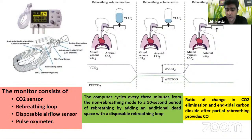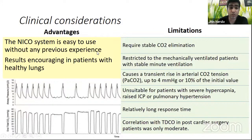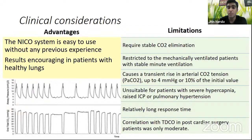The partial carbon dioxide re-breathing method applies the Fick principle. Based on alternating between re-breathing and non-re-breathing periods, the NICO monitor integrates a CO2 sensor and flow sensor measuring CO2 production from the difference between expired and inspired CO2 concentration. A correction is applied for intrapulmonary and anatomical shunt using FiO2, SpO2, and an adaptation of Nunn's hypothesis. The computer cycles every 3 minutes from non-re-breathing mode to a 50-second re-breathing period. A ratio of change in CO2 elimination and end-tidal CO2 after partial re-breathing allows cardiac output calculation. Clinical advantages: easy to use without previous experience, with encouraging results in patients with healthy lungs.